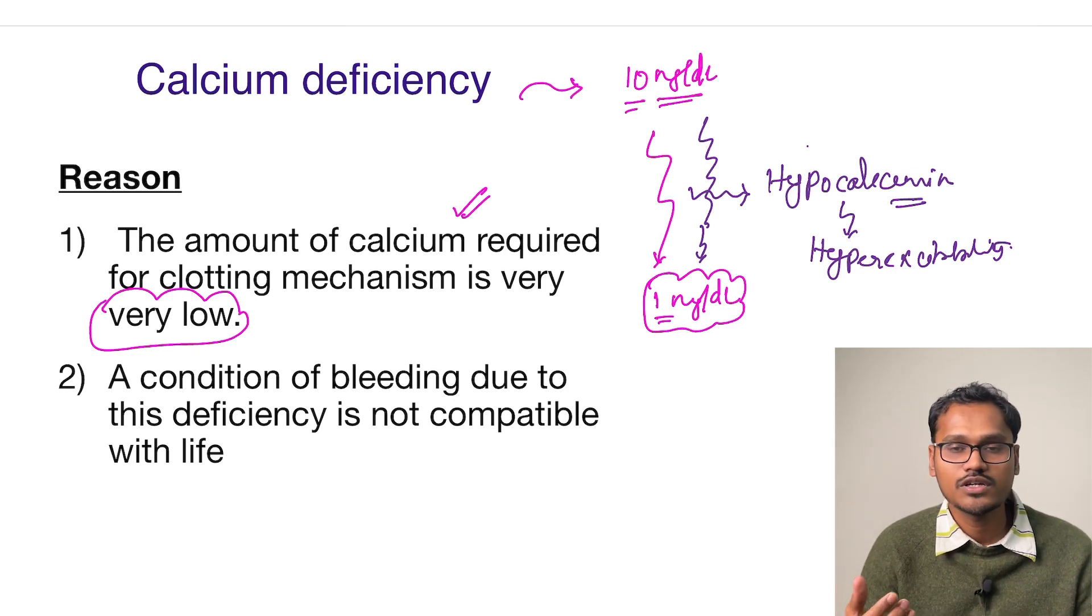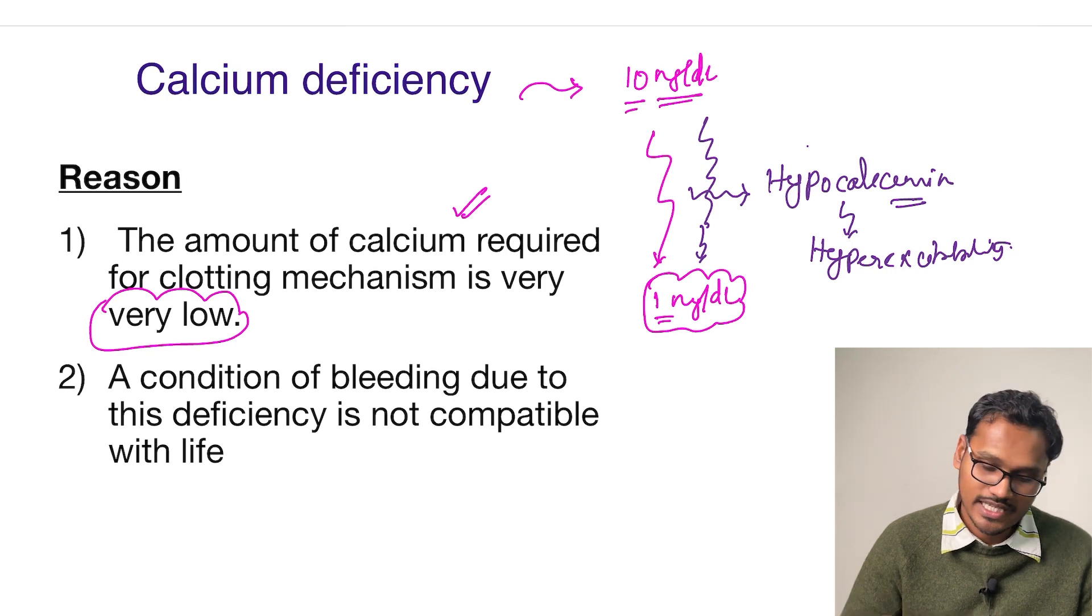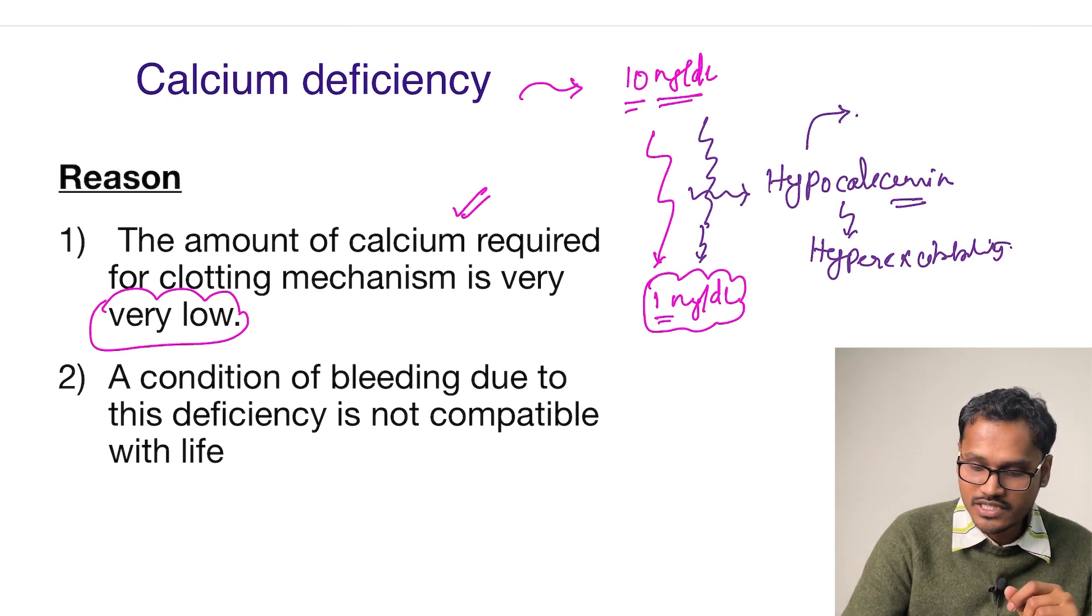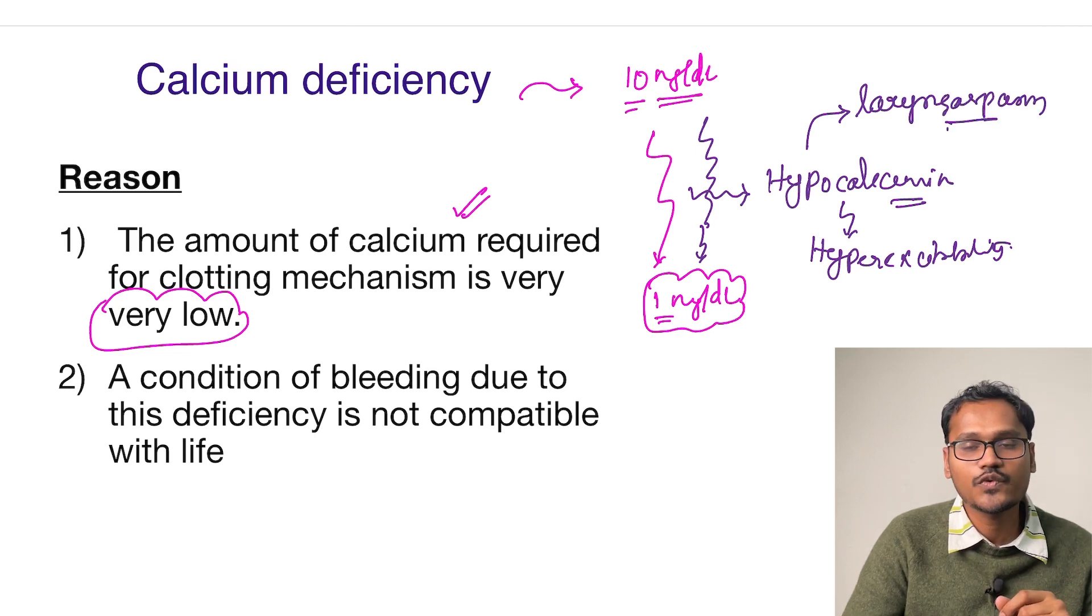spasm and another is Chvostek's sign. These are two minor changes that happen much earlier. There's one severe hyperexcitability that can happen inside the larynx: hypocalcemia can cause laryngospasm. If the larynx goes into